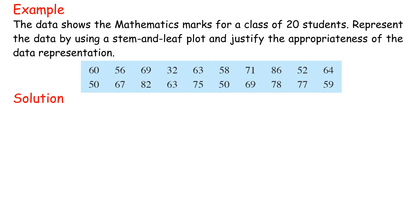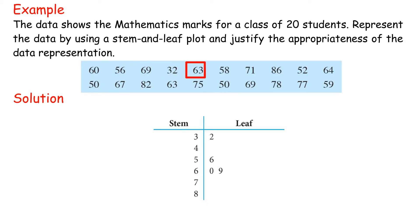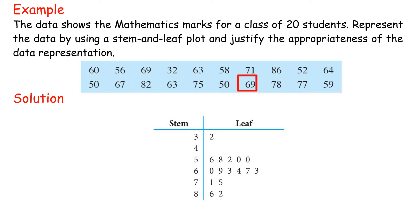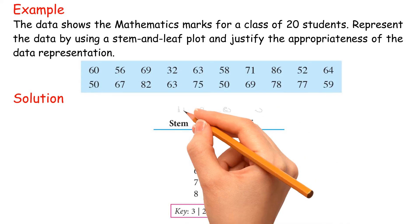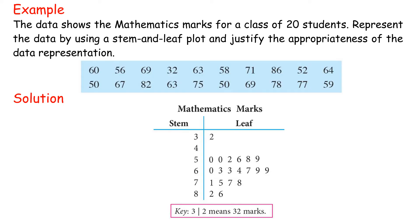Steps to construct a stem and leaf plot: write each data value one by one, take the tens digit as the stem, and write the last digit as the leaf. Rearrange the leaves in ascending order, then write a key and the title. The key indicates the unit for the stem and leaf. This stem and leaf plot is suitable for displaying the marks of each student in the class.